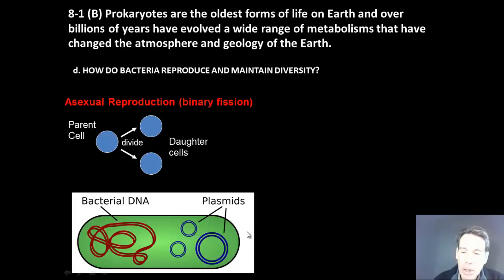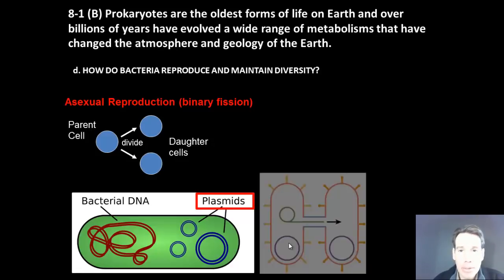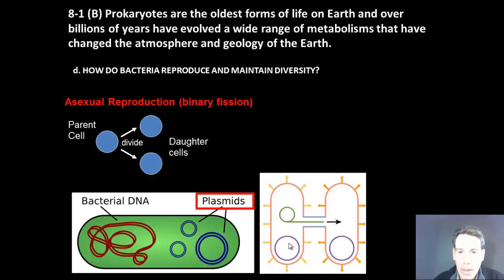Plasmids are extra pieces of genetic information that are outside the major chromosome, and those plasmids may contain genetic information that allows the bacterium to have some new capabilities, such as antibiotic resistance. So here we have, for example, a bacterium on the left. It has a plasmid. Maybe it gives it antibiotic resistance.